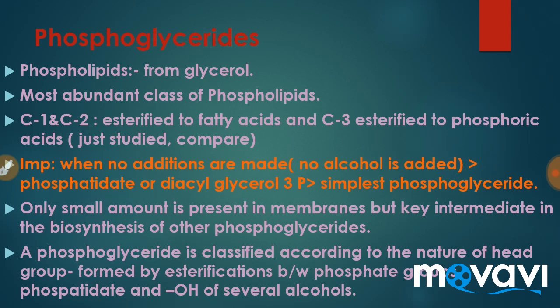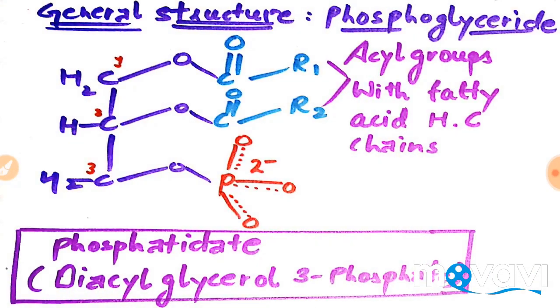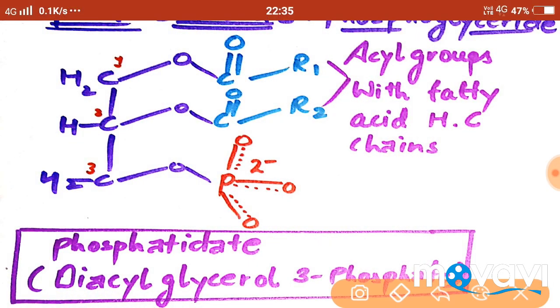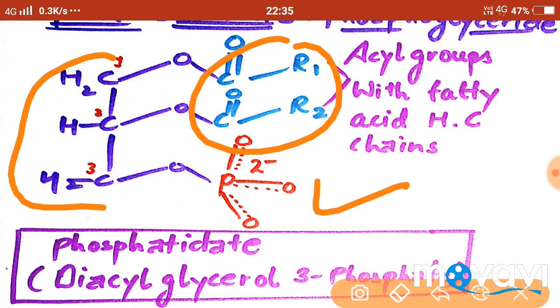An important point: when no alcohol is added — that is, no alcohol moiety is added — the resulting compound is called phosphatidate, or simply diacylglycerol-3-phosphate. This is the simplest phosphoglyceride. You can see the structure of phosphatidate here. Phosphatidates are present in very small amounts, but they are the key intermediate for the categories of phosphoglycerides. From this simplest phosphoglyceride, we are going to add the alcoholic moieties to the phosphate group esterified at the third carbon of glycerol, and this is what classifies the different phospholipids.